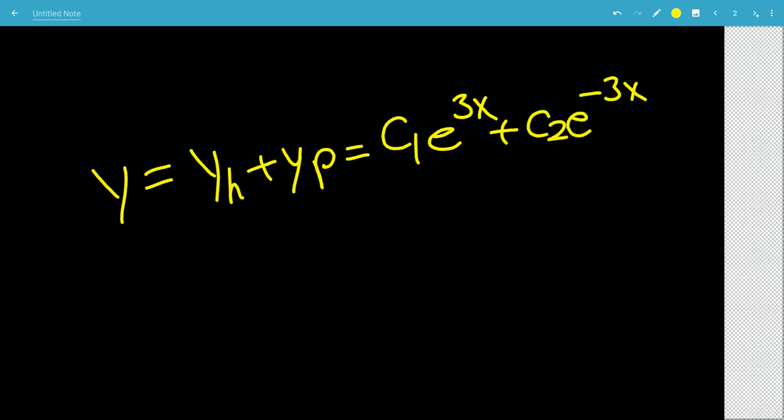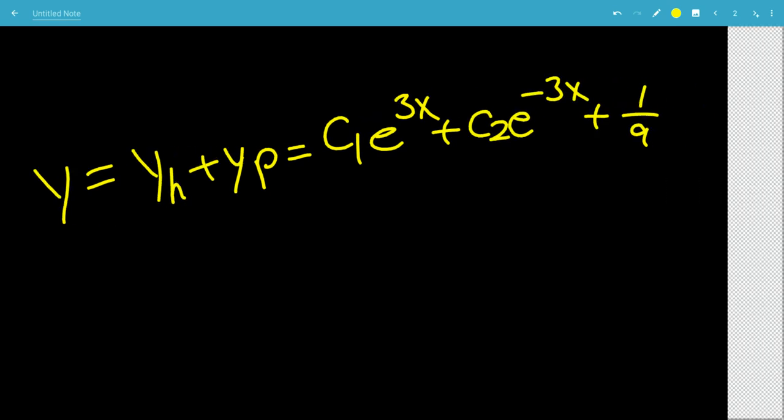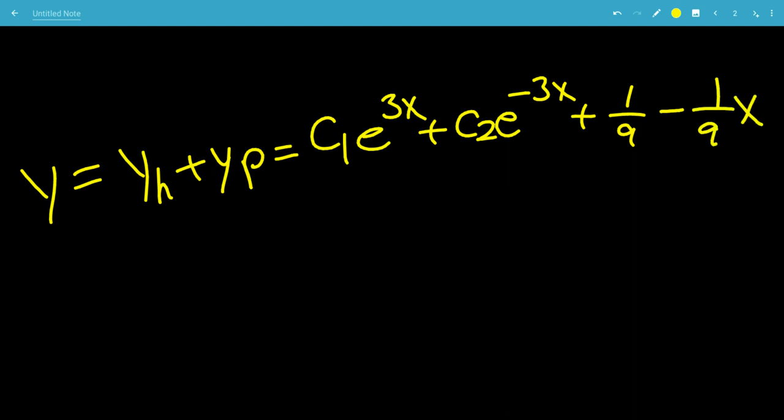So that's good. So that means that y is equal to yh plus yp, which is c1 e to the 3x, plus c2 e to the minus 3x, and we have plus 1 ninth, minus 1 over 9x.